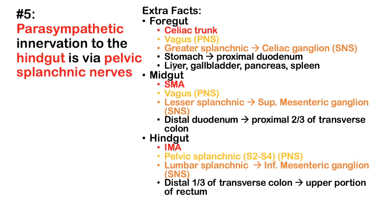The foregut includes the stomach (with all those celiac trunk arteries), proximal duodenum, liver, gallbladder, pancreas, and spleen. The midgut covers the distal duodenum through the proximal two-thirds of the transverse colon — all supplied by the SMA. The hindgut is the distal one-third of the transverse colon all the way to the upper portion of the rectum, supplied by the IMA.